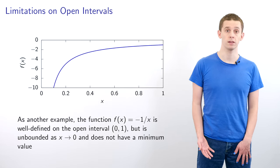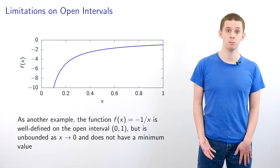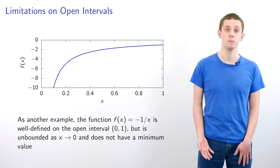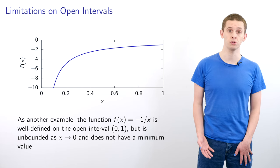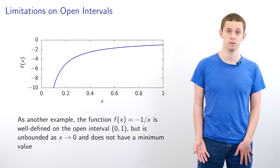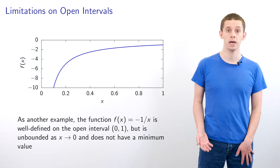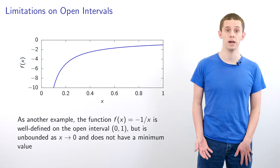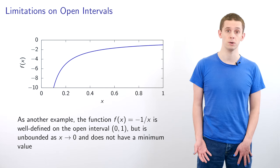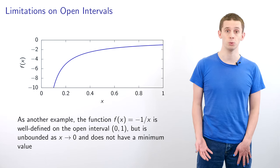There are other problematic cases that can occur with open intervals. For example, let's look at the open interval from 0 to 1 and the function f(x) = −1/x. This function is continuous on this open interval; however, it diverges to minus infinity as x approaches 0. And again, we cannot define a global minimum.